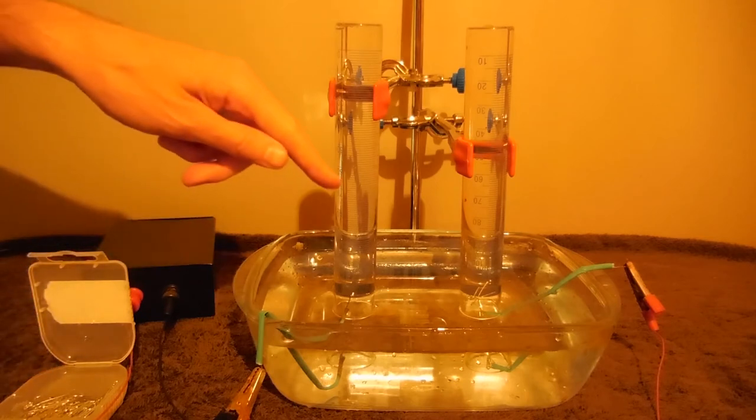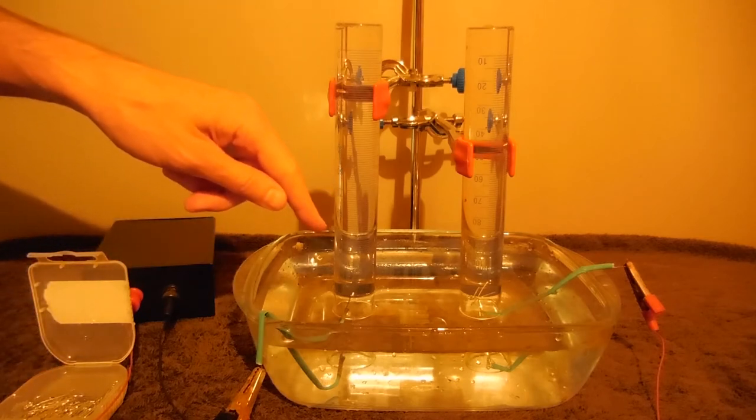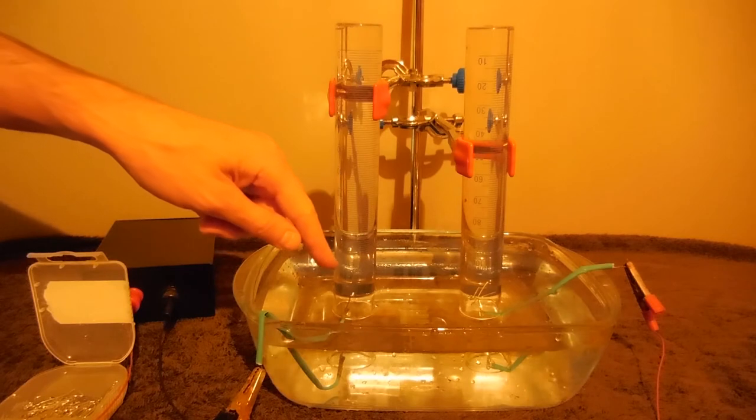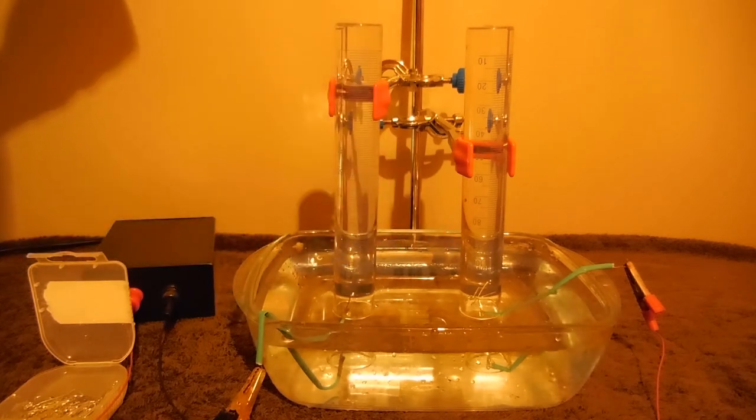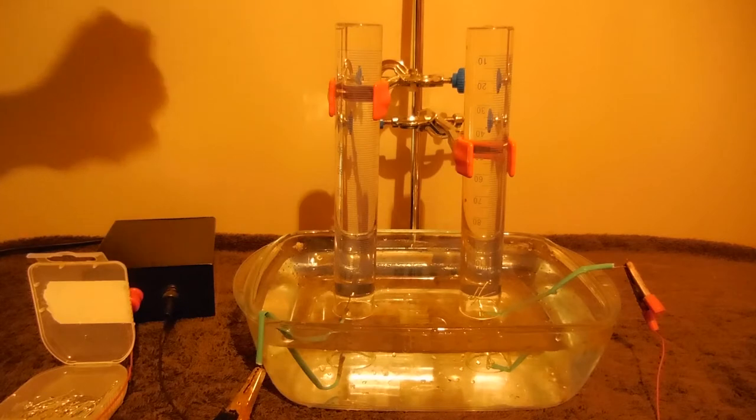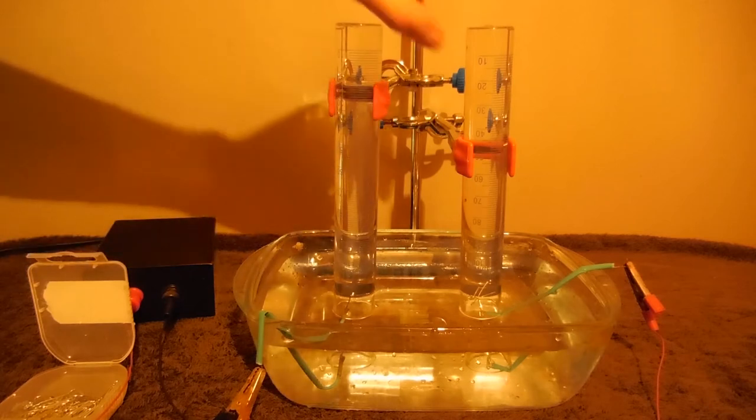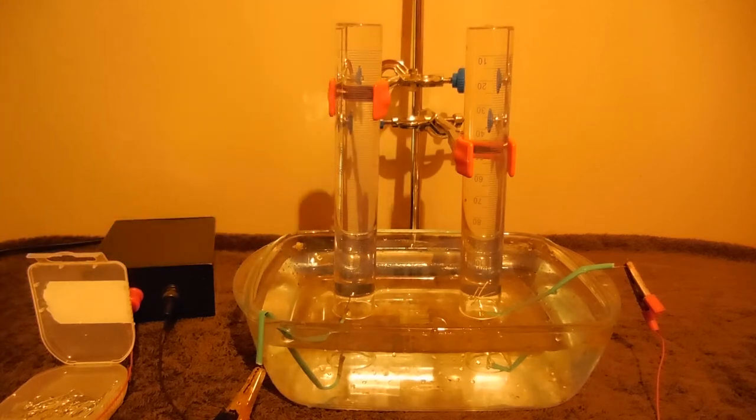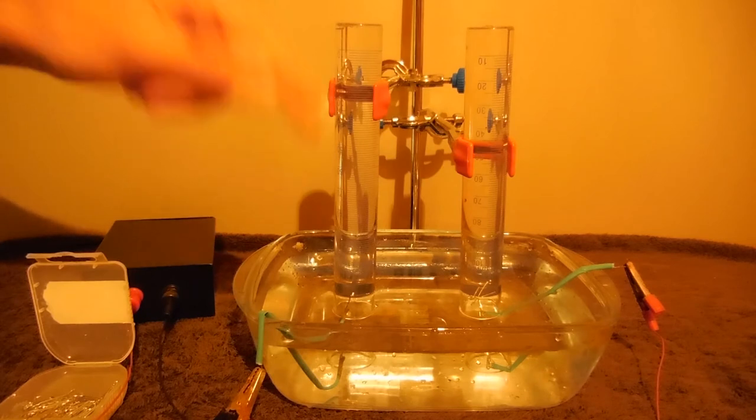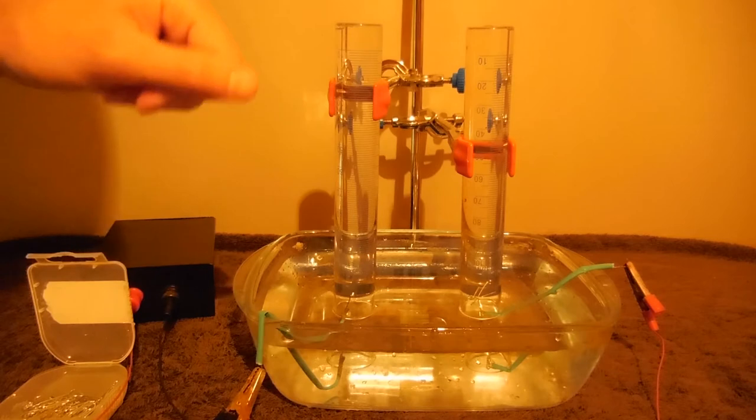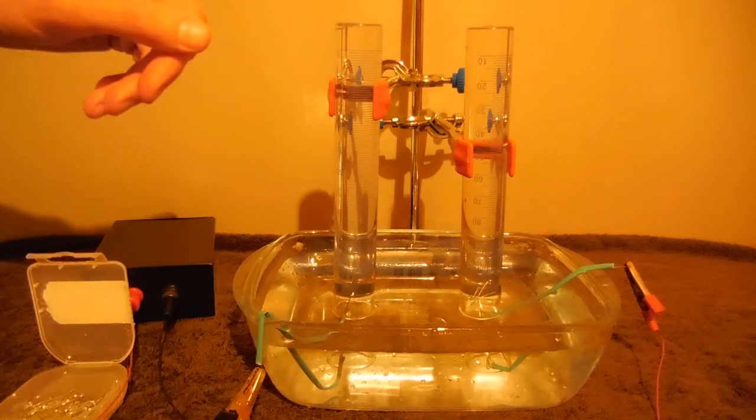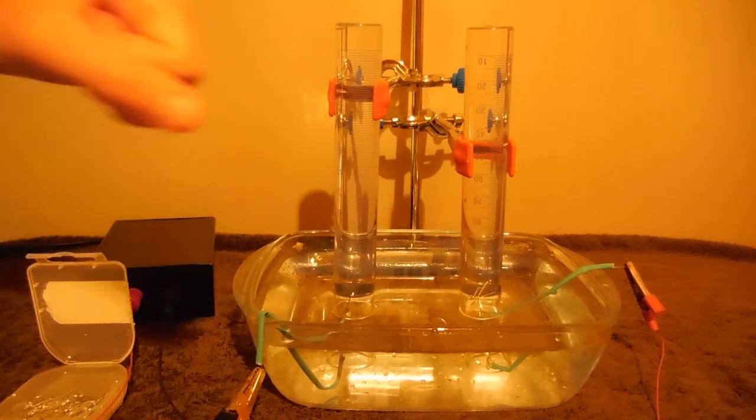On the left there is a negative electrode and there will be produced hydrogen gas. On the right there is a positive electrode and there should be no oxygen produced and no gas here. But there will be produced iron hydroxide. It will be visible as an orange substance in water.